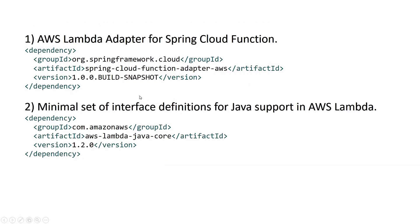These are the dependencies we are going to use in our project. The first one is the Spring Cloud Function Adapter AWS, which is a dependency provided by Spring Cloud. The second one is AWS Lambda Java Core, which is a dependency provided by AWS. Let's go to the Spring Initializr website and download a sample Spring Boot application from there.